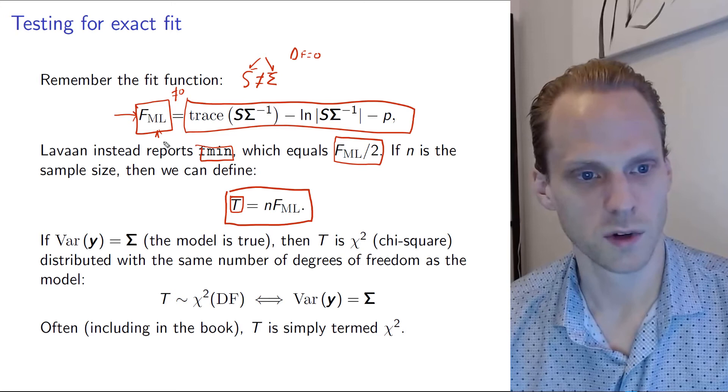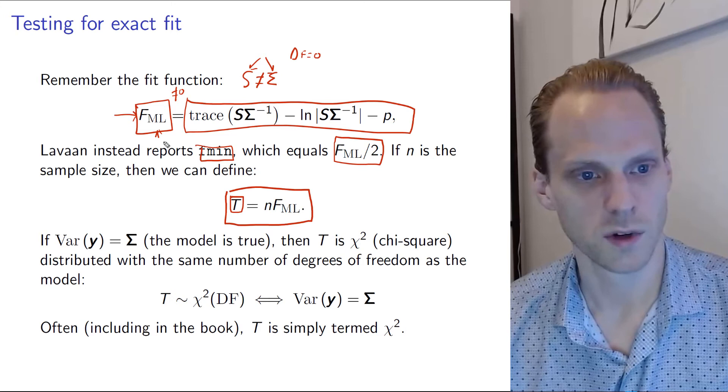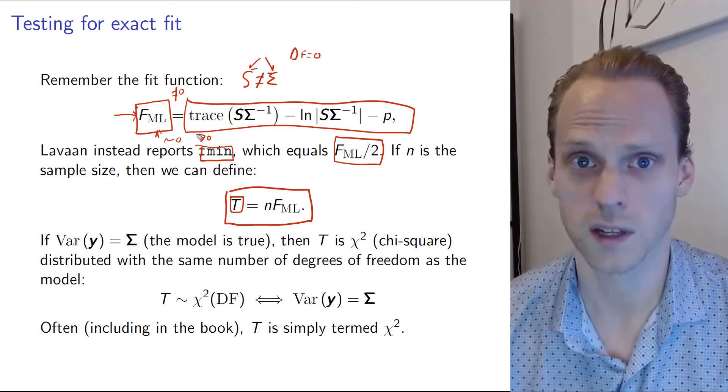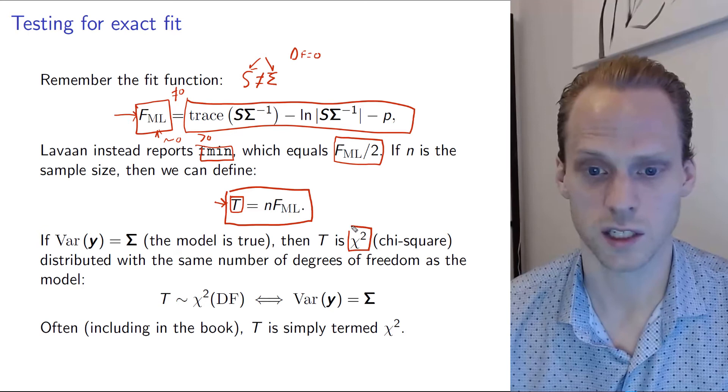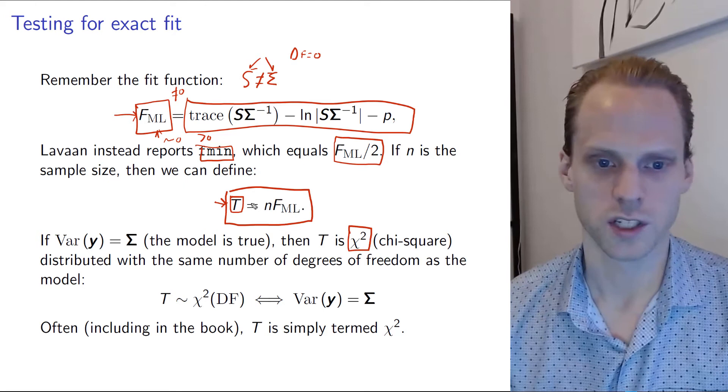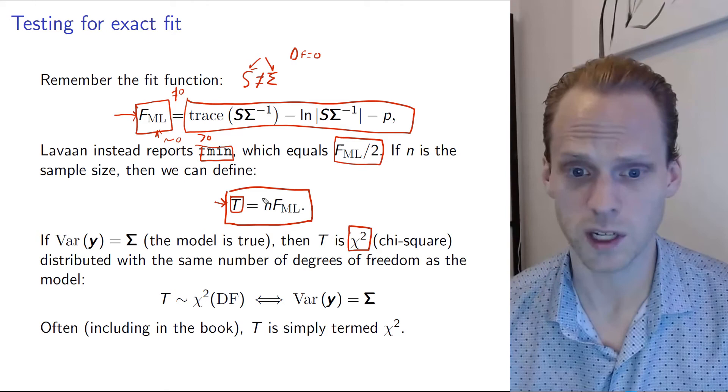So FML will be somewhere near zero if it's good and far above zero if it's a bad fit. So how do we define near zero and far above zero? Well that we do with this t statistic, which is often also simply called the chi-square statistic. So many software packages including Psychonetrics and Lavaan will not say t, they will say chi-square. But in the slides I make a difference between them because it's a bit more clear.